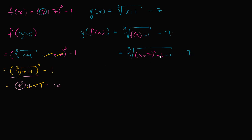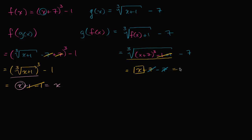Subtracting one and adding one, those cancel out. So we're going to take the cube root of x plus seven to the third power. The cube root of x plus seven to the third power is just x plus seven. So this simplifies to x plus seven, and then we subtract seven — these two negate each other. And we are just left with x.